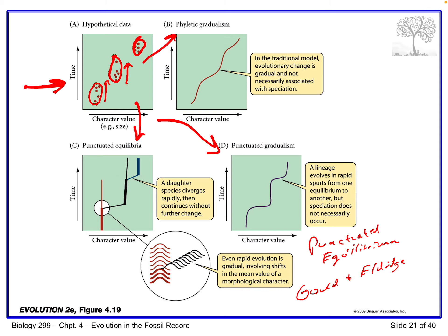Gould and Eldridge proposed that some gaps in the fossil record might correspond to periods of change that occurred so quickly the changes were not recorded. They proposed that lineages may exist in a state of equilibrium - stasis - for a long time with little or no change, but then undergo rapid change to a new equilibrium. That's why they called their hypothesis punctuated equilibrium, and it's an important evolutionary theory today.